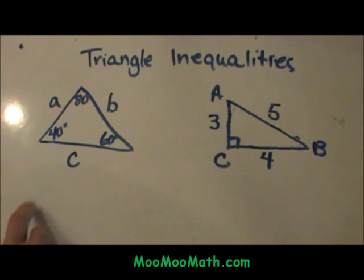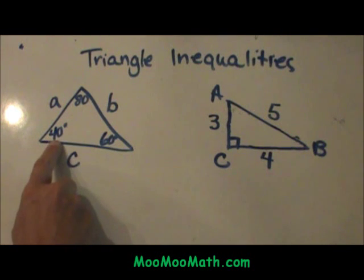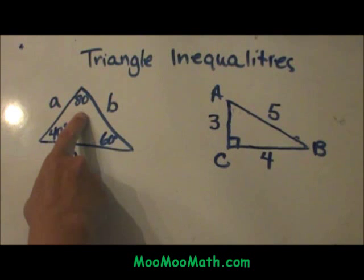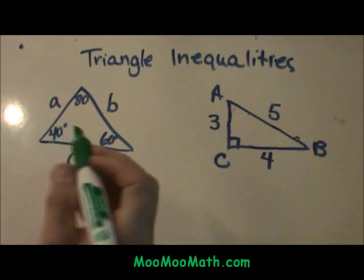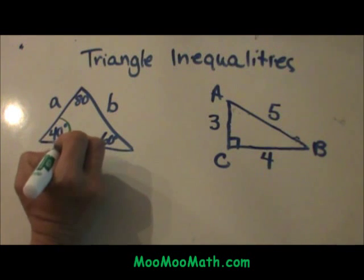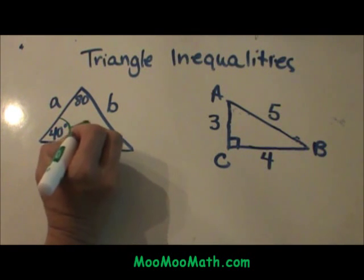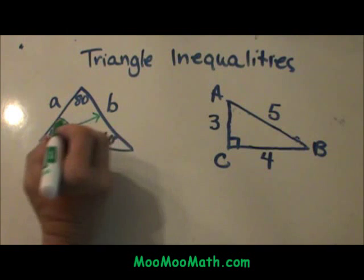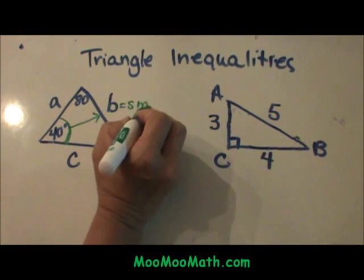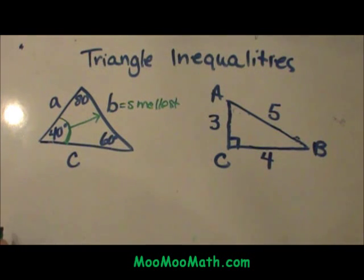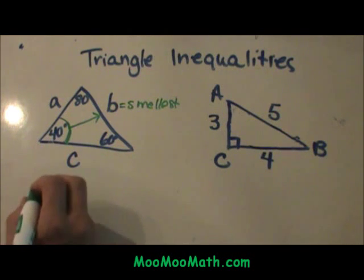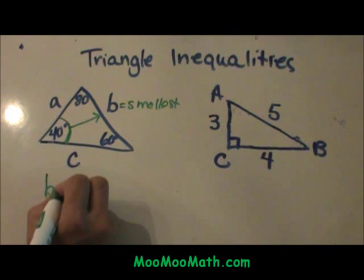Over here with the angles, we are given the angles of 40, 60, and 80, and we need to list our sides from smallest to greatest. We already know our smallest angle is 40 degrees. So I am going to go to my smallest angle and go across that triangle. That means that side B is going to be my smallest side because it is opposite my smallest angle.